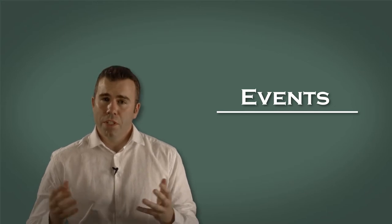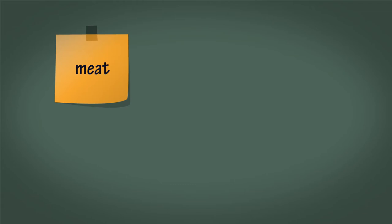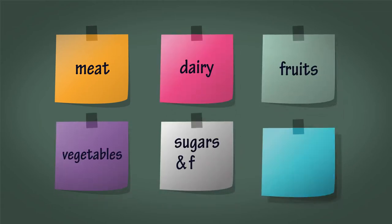Events. Moving on to the events section here, we firstly want the team to think about all of the elements of a balanced diet. We're thinking in terms of the major food groups such as meat, dairy, fruits, vegetables, sugars and fats, or water perhaps, and write each of those food groups in bold letters on large sticky notes and place them onto the wall.